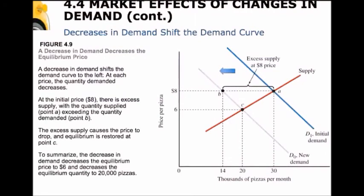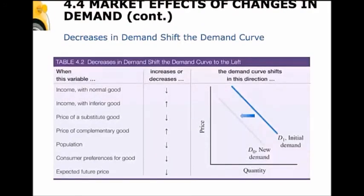A decrease in demand is a shift to the left of the demand curve. We move from an equilibrium with the initial demand curve D1 at point A down to a new equilibrium at point C with the new demand curve. At point C we can see that price has fallen and quantity has fallen — anytime there's a decrease in demand, prices and quantity both go down. The variables that decrease demand are the same ones as before but moving in the opposite direction: income falling for a normal good, income rising for an inferior good, or a decrease in population.